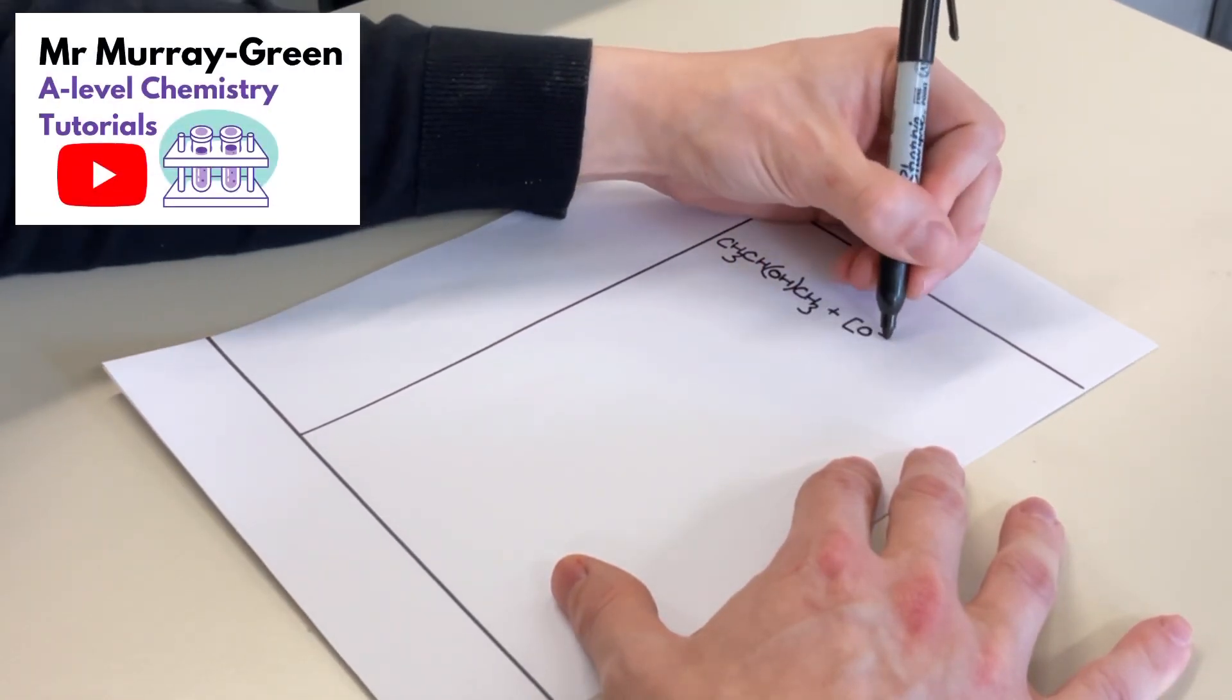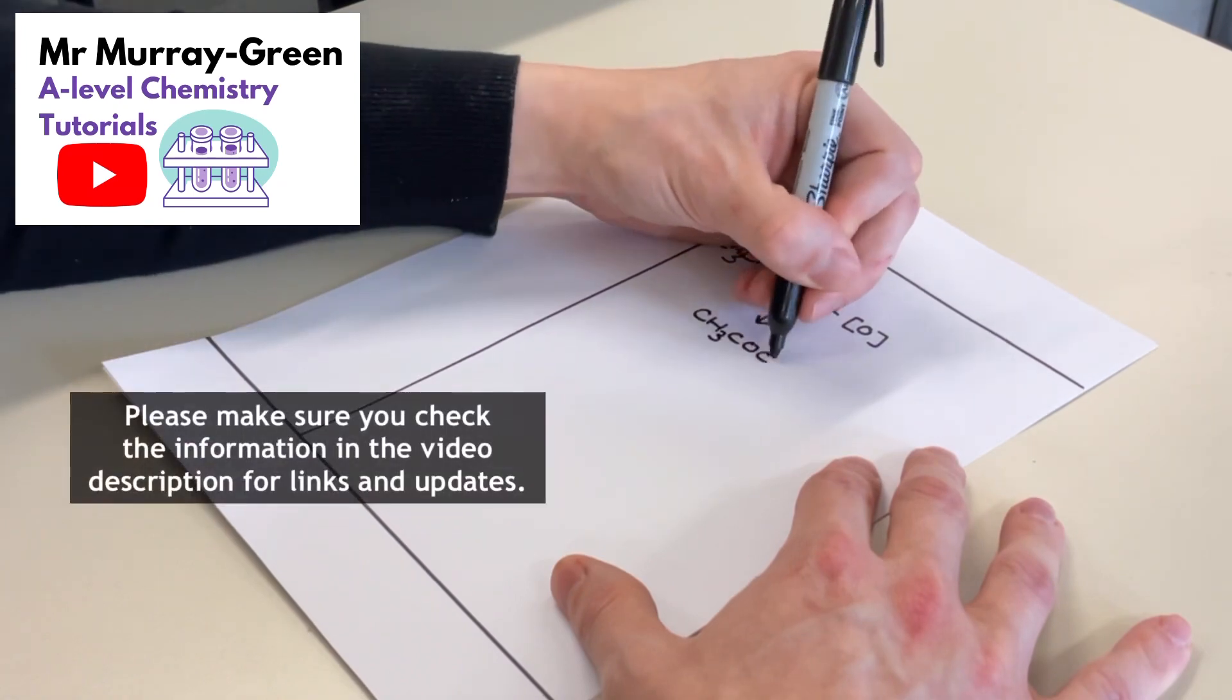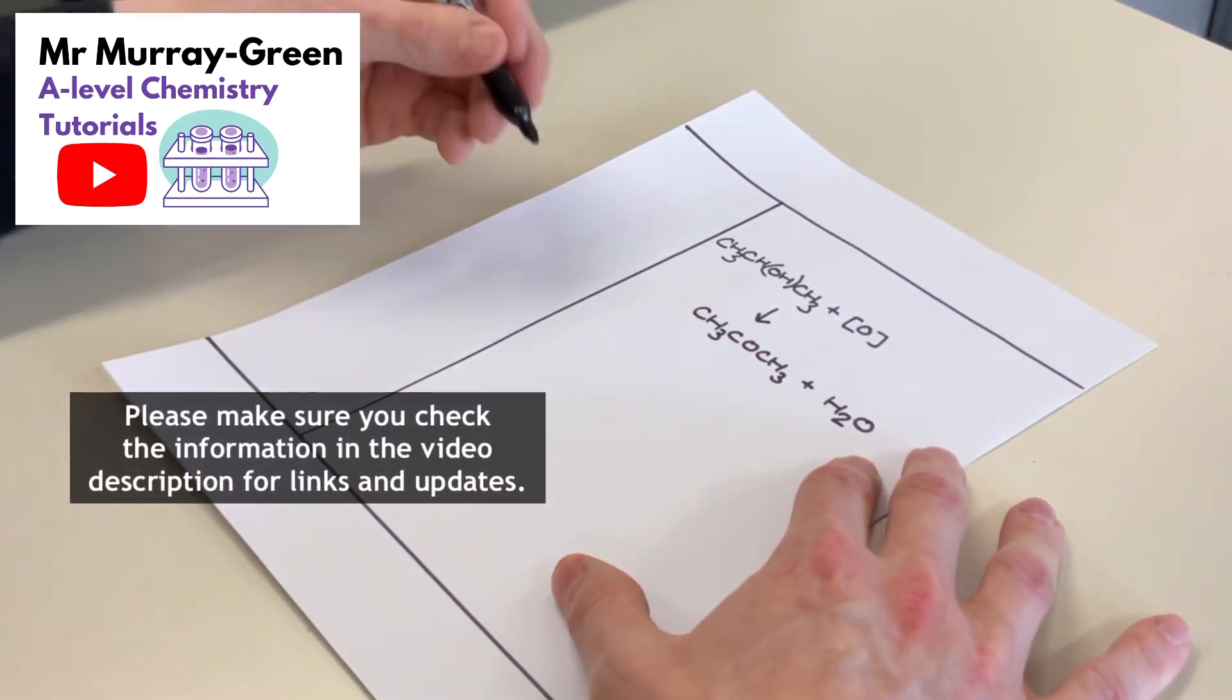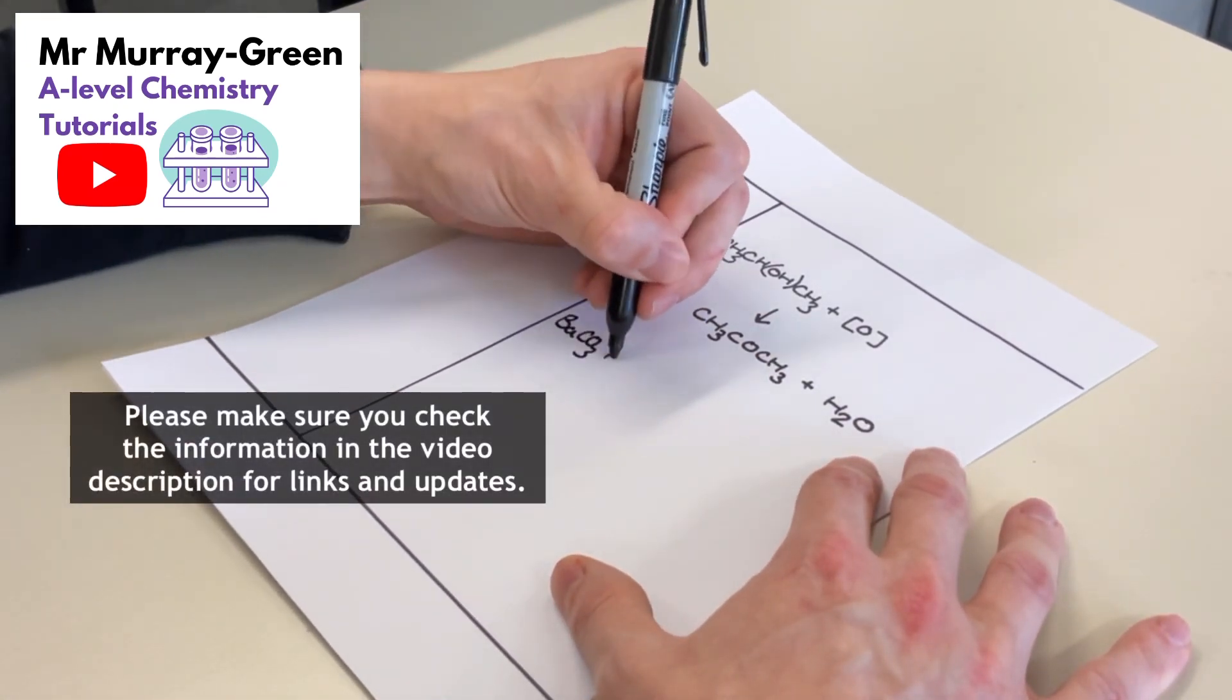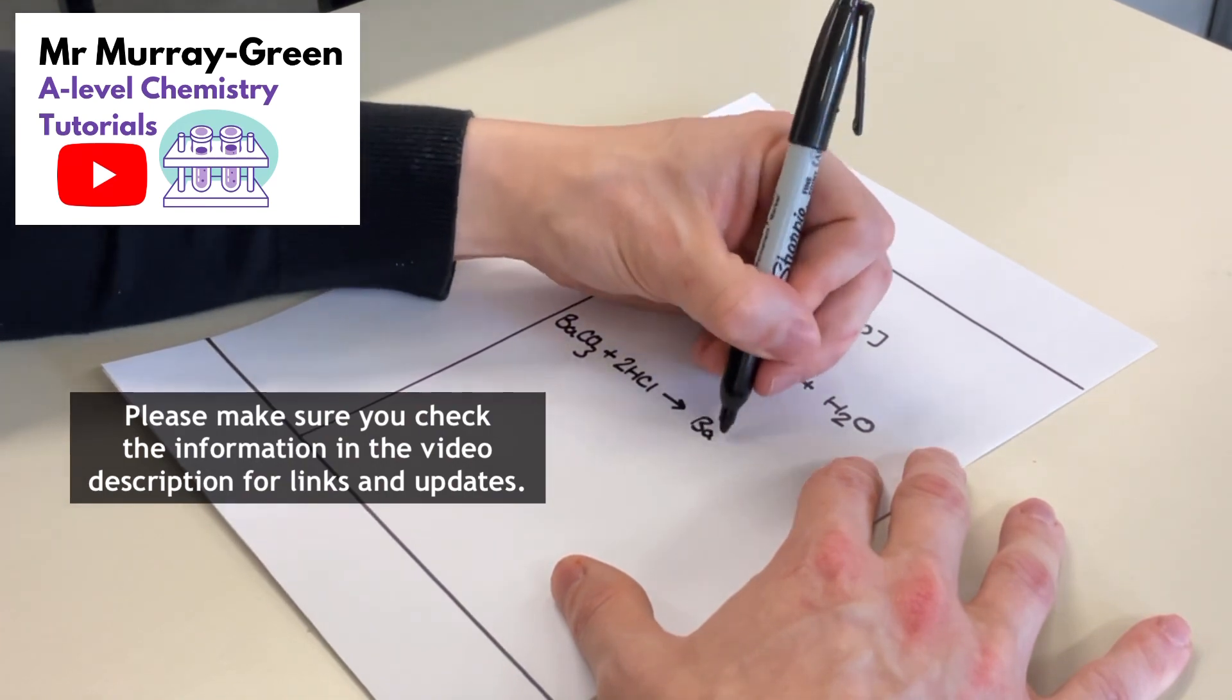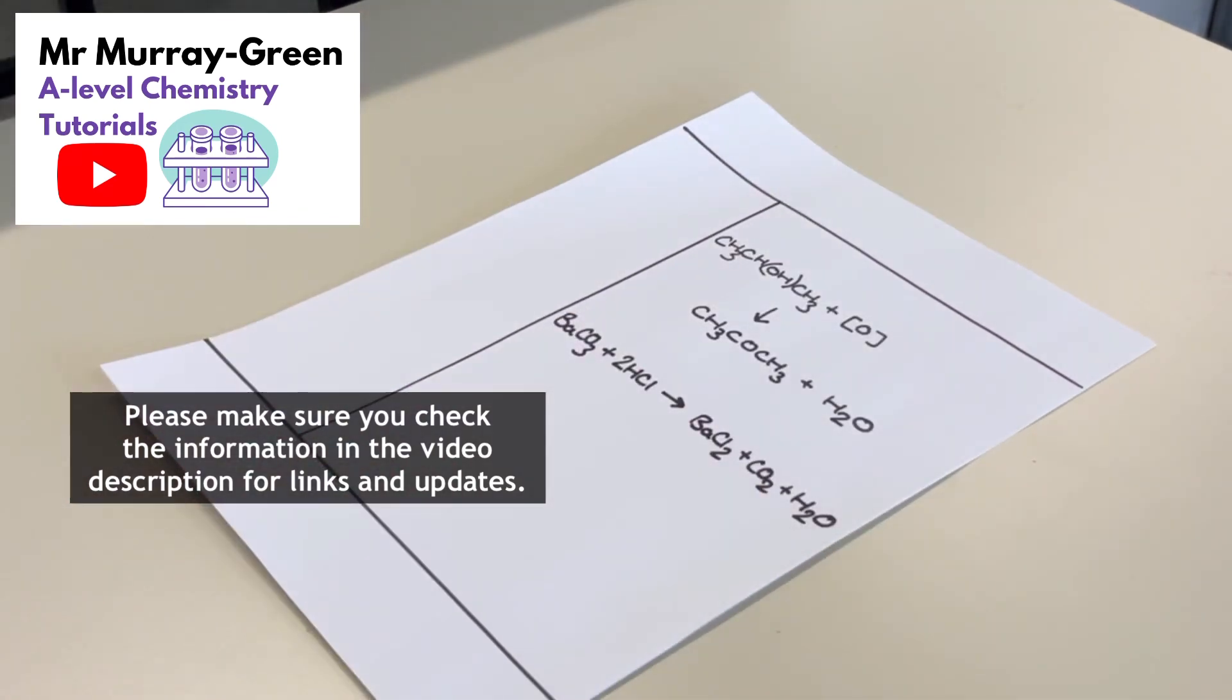Revising chemistry can be very tough and it really is all in the details. Here are three revision hacks to help improve your progress in chemistry and help you make the most of your study time ahead of an examination.